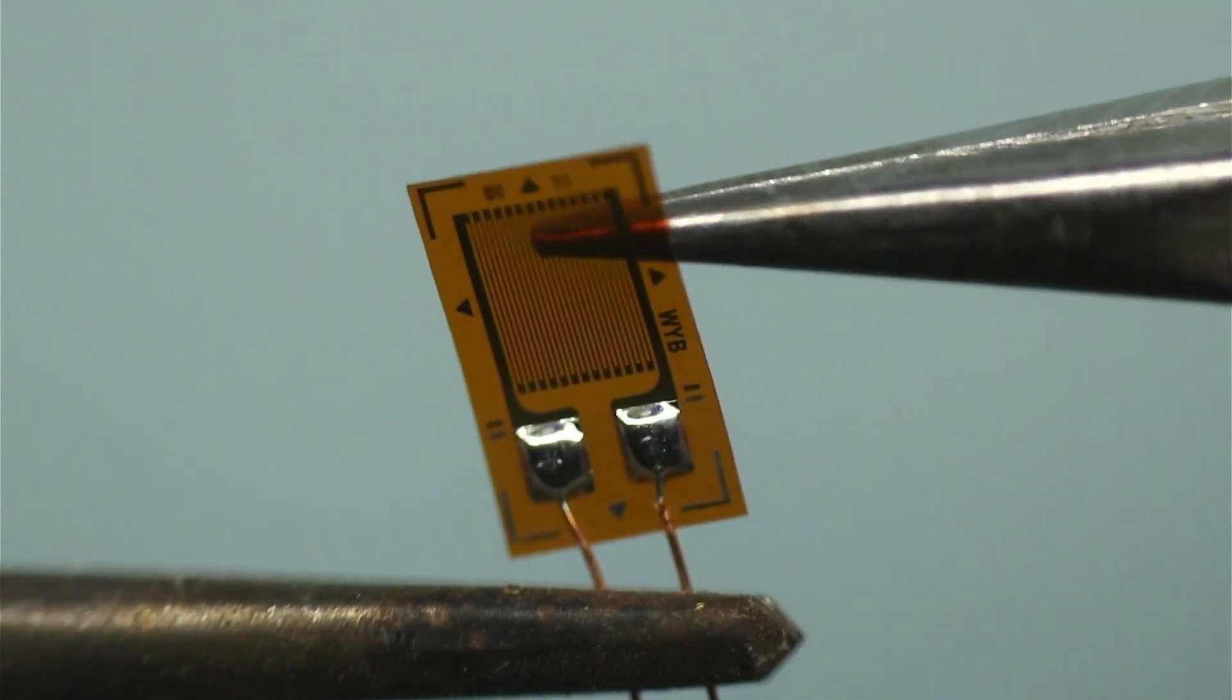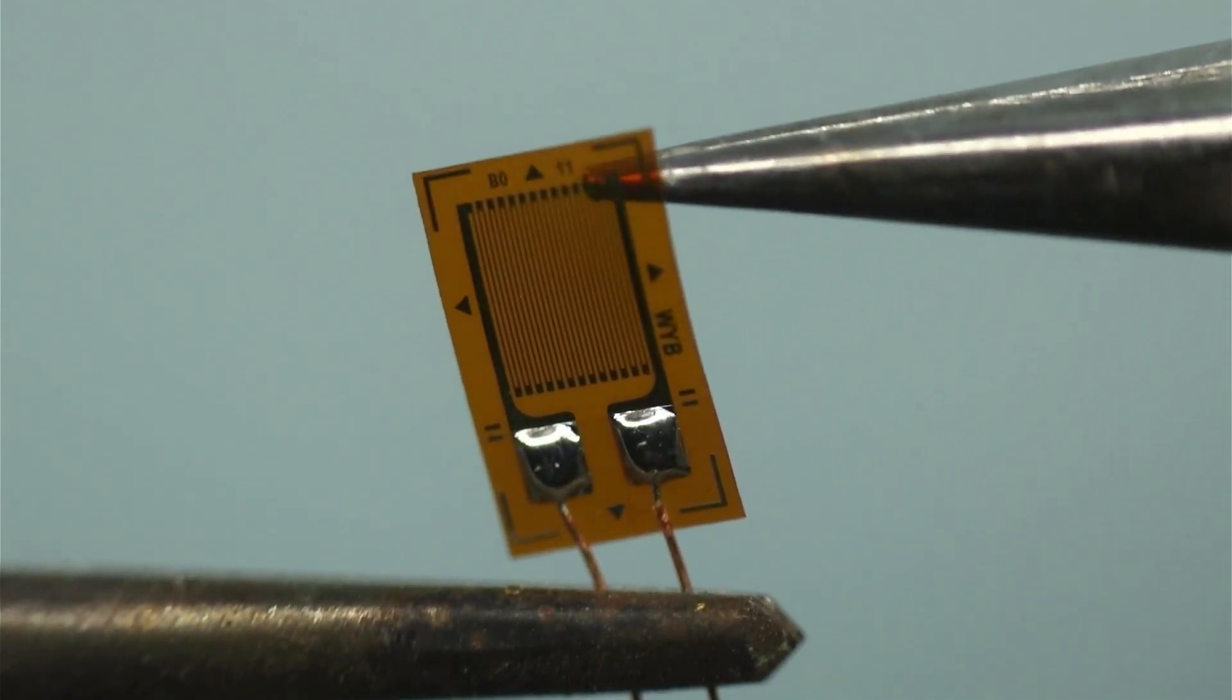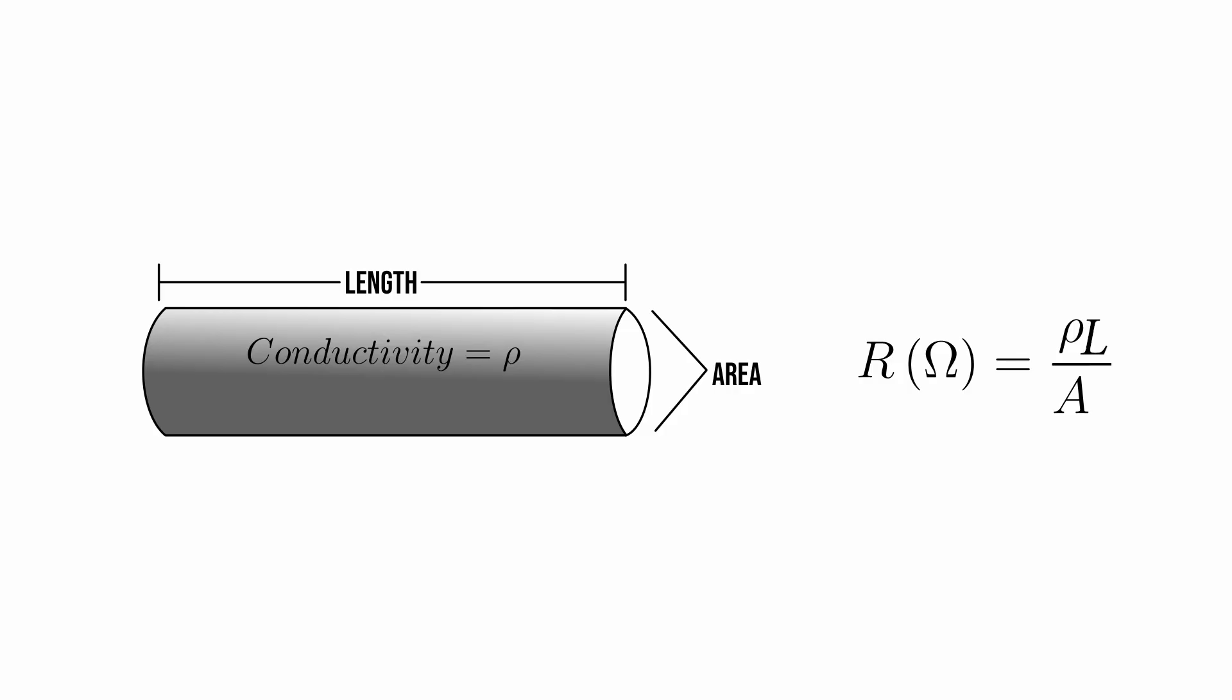As the shape of the strain gauge is stretched, bent, or twisted, the resistance of the material changes. If we look at the formula for resistance, we can see why the resistive foil is patterned the way it is. If we have a material with a certain conductivity ρ, we can multiply that by the ratio of the physical length of the resistor divided by the cross-sectional area A.